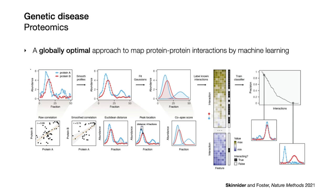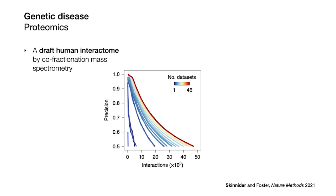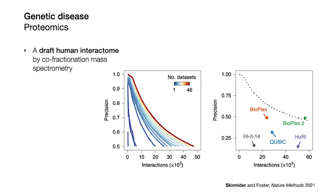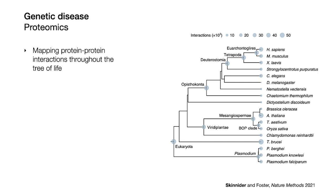I then used this package to integrate every human co-fractionation experiment ever published and assemble a draft map of the human protein interaction network by co-fractionation mass spectrometry. Remarkably, I showed that integrating co-fractionation data at this scale allowed us to map protein interactions even more accurately than conventional assays in genetically modified cell lines or yeast, which are orders of magnitude more labor intensive. I then applied this optimized approach to map protein interaction networks for every species or phylogenetic clade in the entire dataset, providing a resource to understand the evolution of protein interaction networks throughout the tree of life.